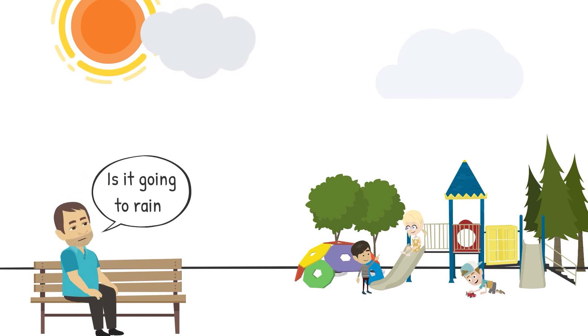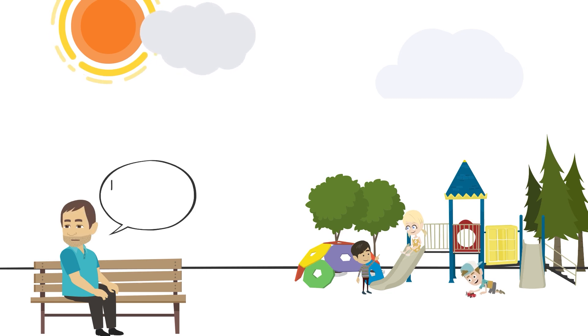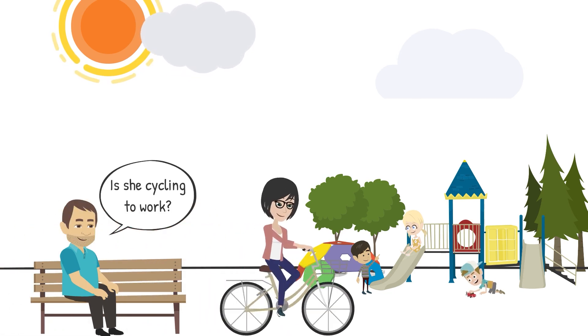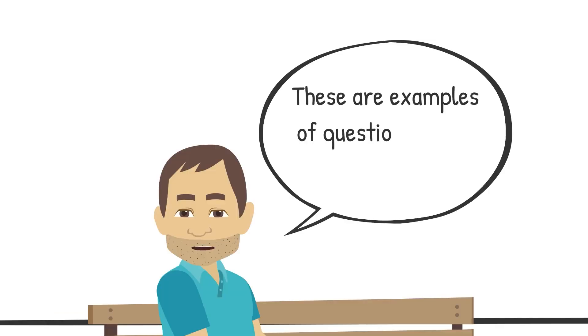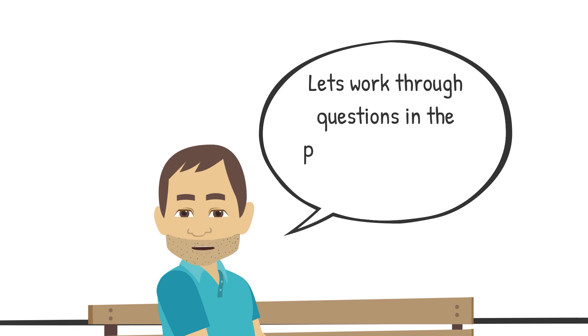Is it going to rain? Are they playing on the playground? Is she cycling to work? These are examples of questions in the present continuous. Let's work through questions in the present continuous through an example.